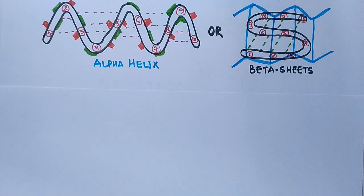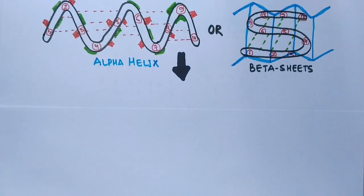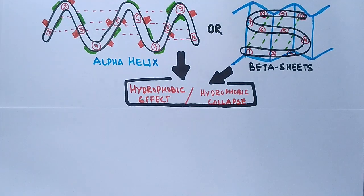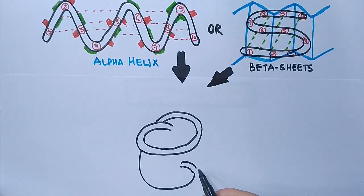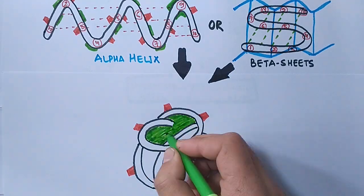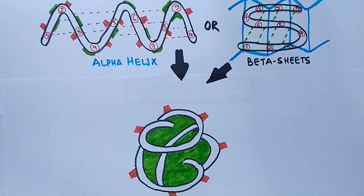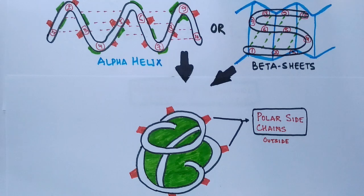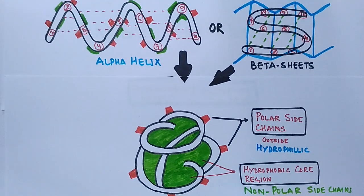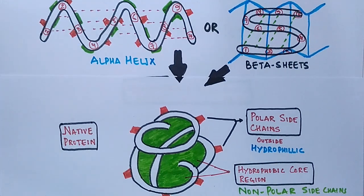The hydrophobic instability of the secondary structure drives its transformation into the tertiary structure through a process called the hydrophobic effect, or hydrophobic collapse. In the resulting stabilized structure, hydrophilic sides face the aqueous environment surrounding the protein, while hydrophobic sides face the hydrophobic core at the interior. The polar side chains are on the outside, and the non-polar side chains form the hydrophobic core at the center. This final conformation is the native, three-dimensional functional protein.